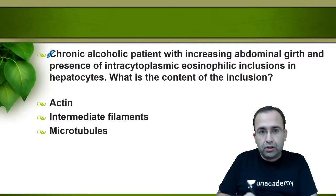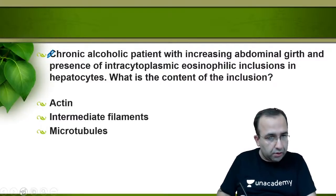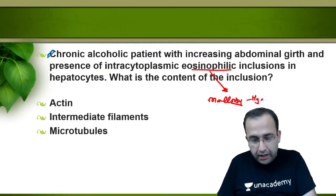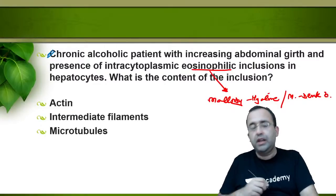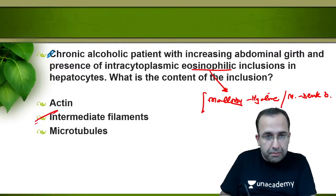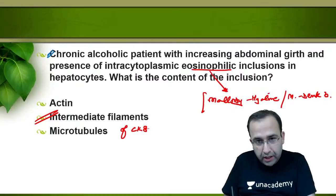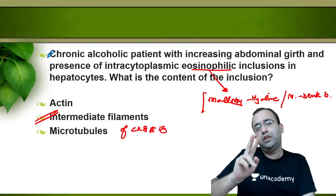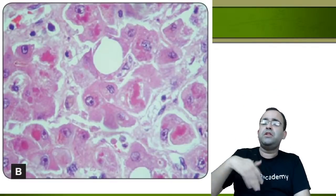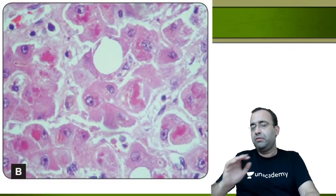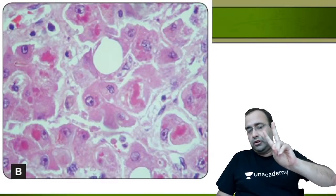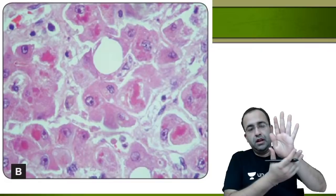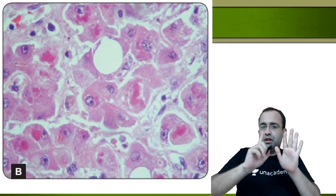Next question: a chronic alcoholic presents with increasing abdominal girth. Intracytoplasmic eosinophilic inclusions are seen in hepatocytes — these are Mallory bodies, also called Mallory-Denk bodies. They are intermediate filaments of cytokeratin 8 and 18, complexed with ubiquitin. The answer is intermediate filaments. Diseases associated with Mallory bodies: alcoholic liver disease, non-alcoholic fatty liver disease (NAFLD).